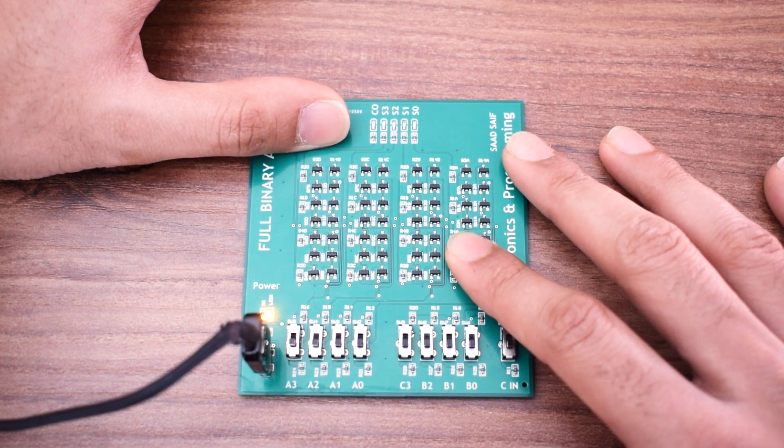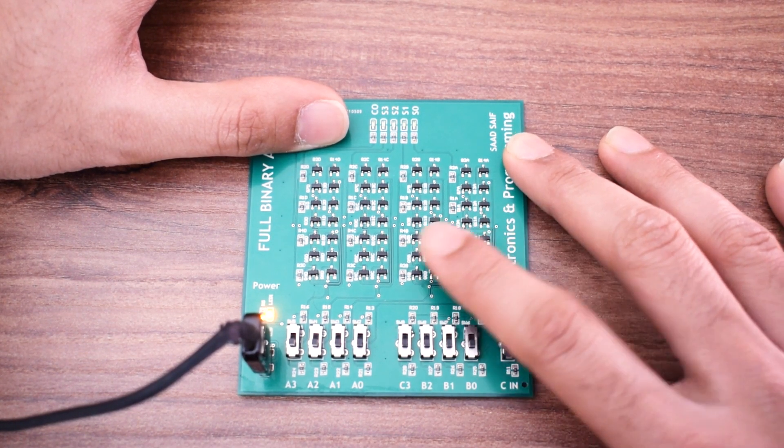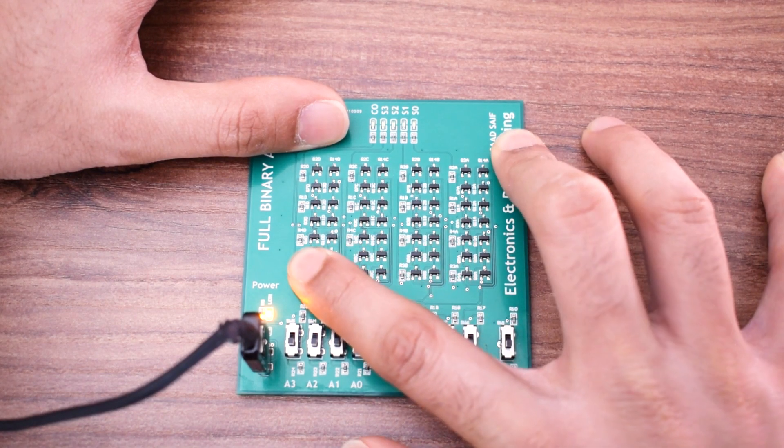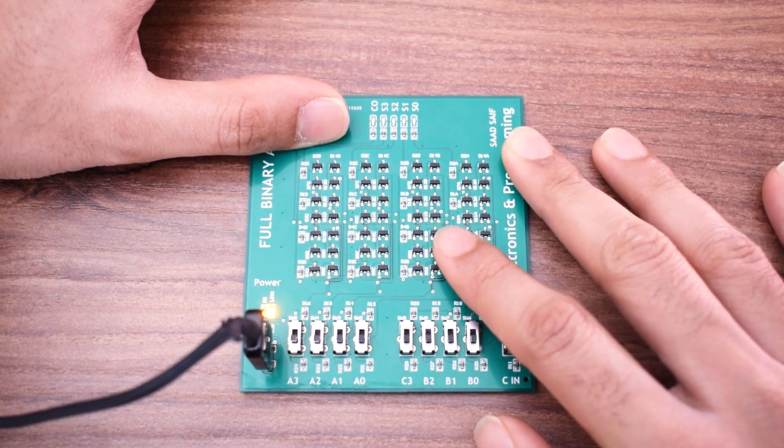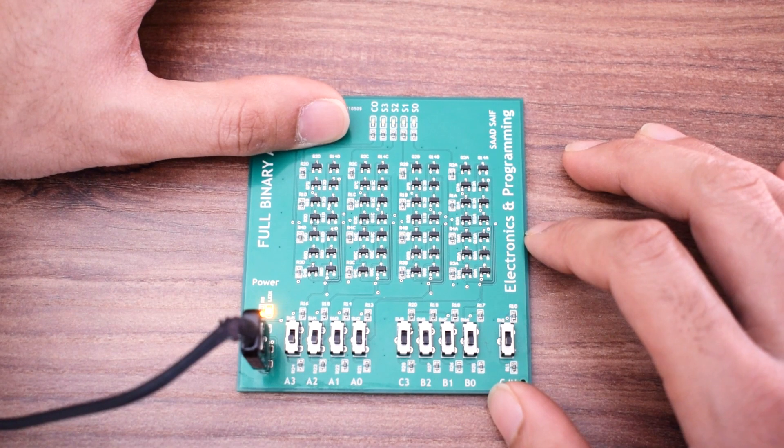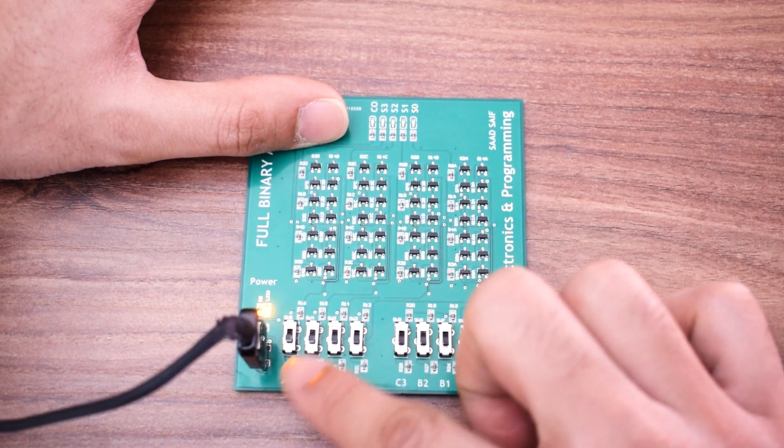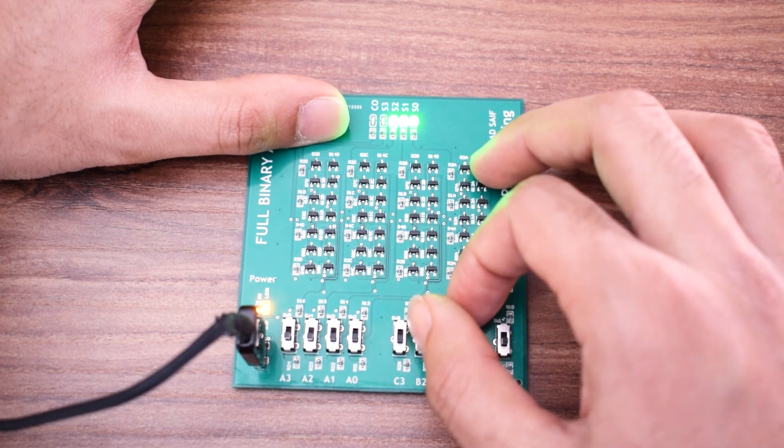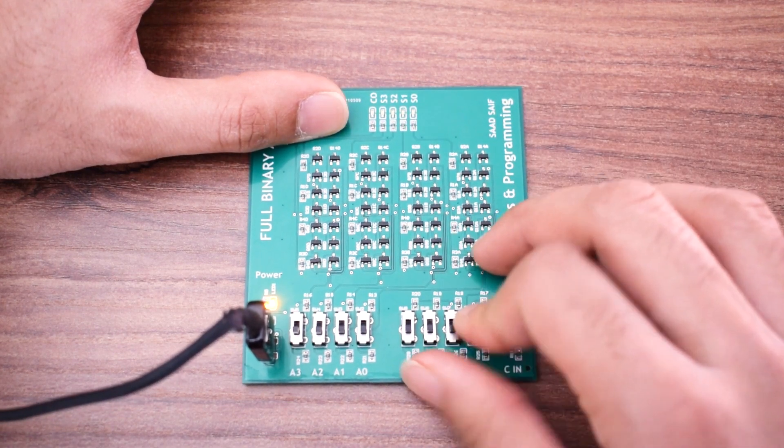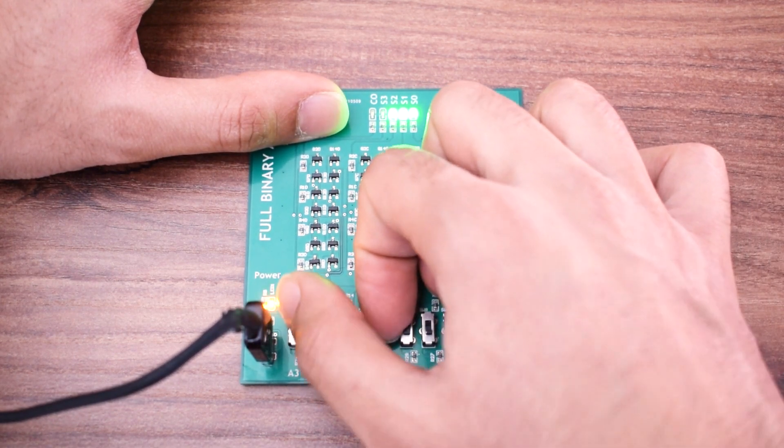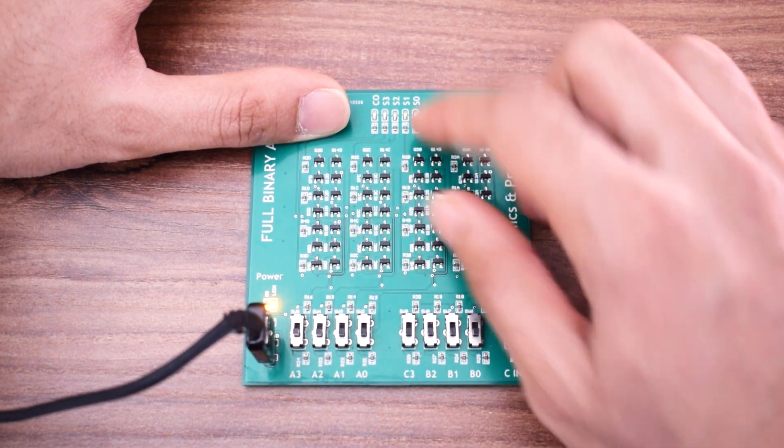This is a 4-bit binary adder and we have four individual single-bit binary adders that have been cascaded. This device can now add any 4-bit binary numbers and these are the inputs. So you input one of the numbers from this side and the other input is on here, and then the result is shown here.